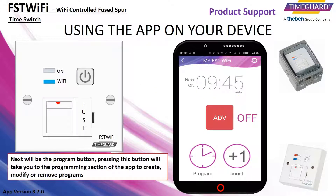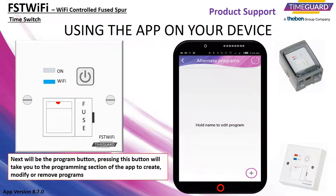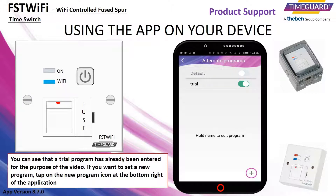Next will be the program button. Pressing this button will take you to the programming section of the app to create, modify or remove programs. You can see that a trial program has already been entered for the purpose of the video. If you want to set a new program, tap on the new program icon at the bottom right of the application.